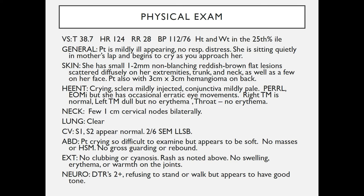Physical exam: temperature is 38.7, heart rate 124, respiratory rate 28, blood pressure 112/76. Height and weight are in the 25th percentile. The patient is mildly ill-appearing with no respiratory distress. She is sitting quietly in mother's lap and begins to cry as you approach. On skin exam, she has small 1-2 mm non-blanching reddish-brown flat lesions scattered diffusely on her extremities, trunk, neck, and a few on her face.